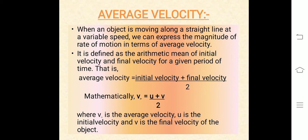Average velocity. When an object is moving along a straight line at a variable speed, we can express the magnitude of its rate of motion in terms of average velocity. Average velocity is defined as the arithmetic mean of initial velocity and final velocity for a given period of time. That is, average velocity equals initial velocity plus final velocity divided by 2. Mathematically, V_average equals (U plus V) divided by 2, where U is the initial velocity and V is the final velocity of the object.